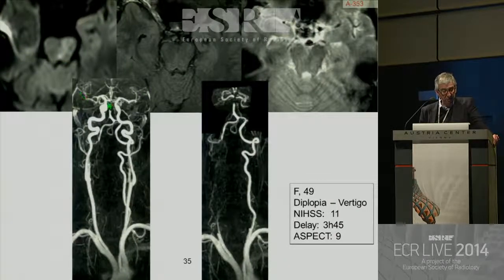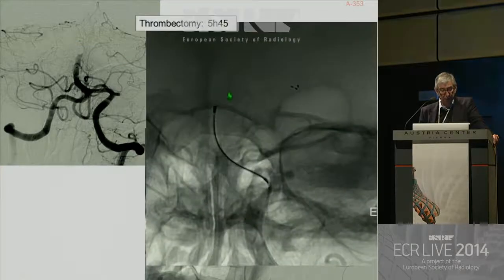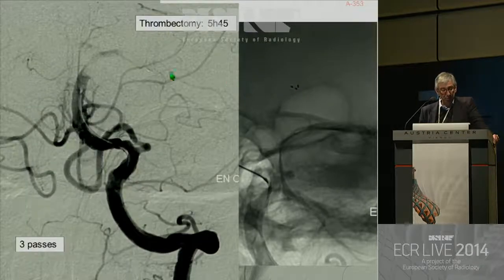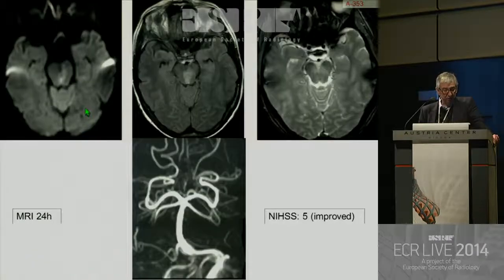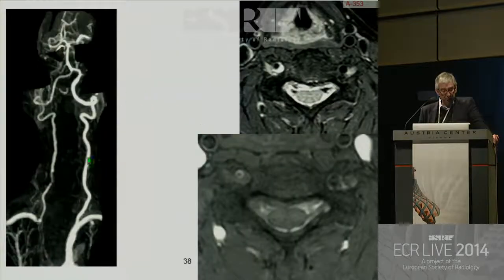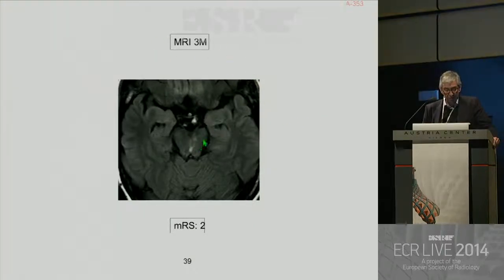Another example: limited lesion in the pons with occlusion of the basilar artery. Angiography treatment was performed using the stent retriever, obtaining complete reopening of the artery. The final result is a limited lesion in the pons with improvement of clinical status. MRI shows the cause of the ischemic lesion is a dissection of the vertebral artery. MRI at three months shows very limited pontine lesion and good clinical outcome.